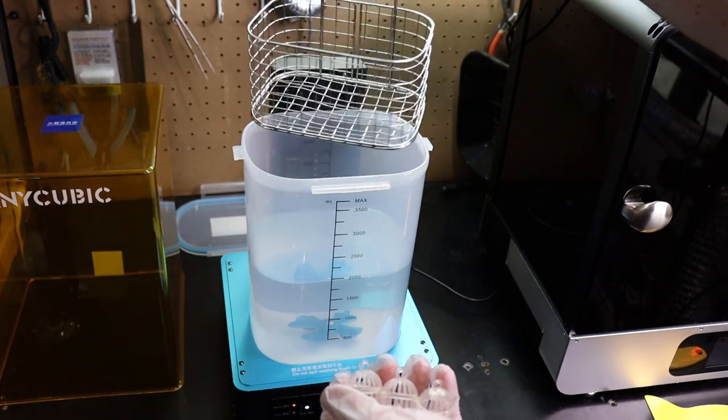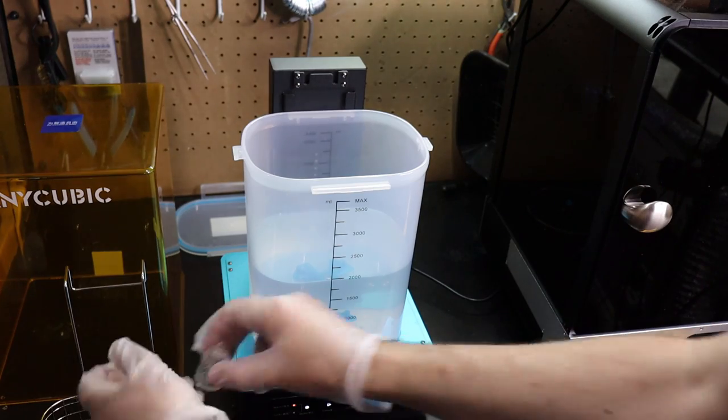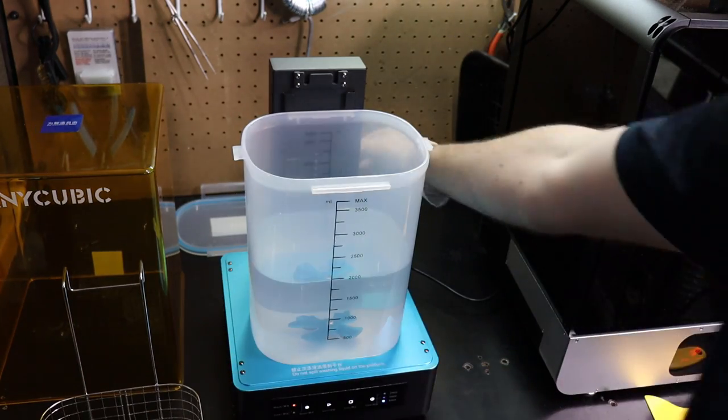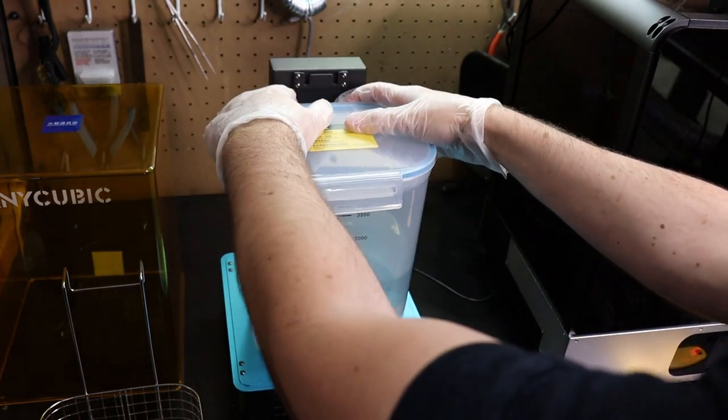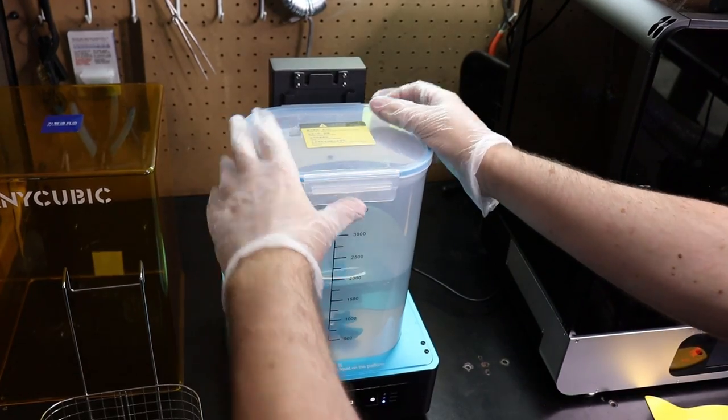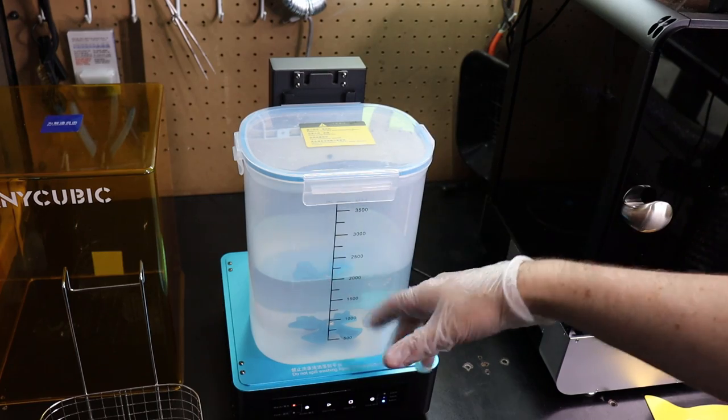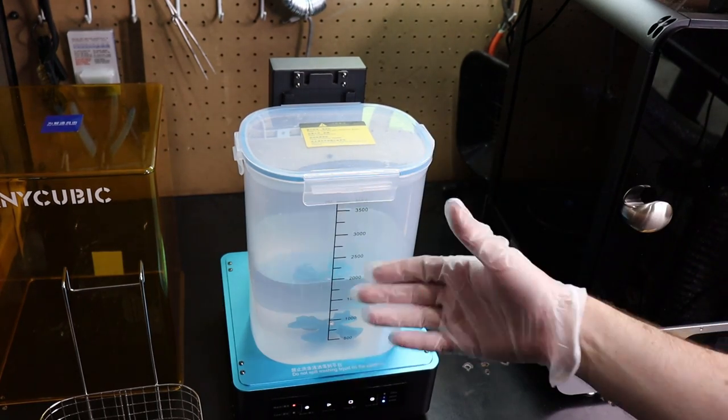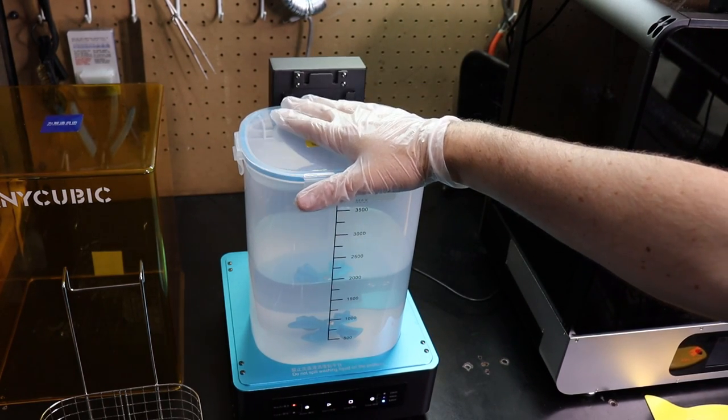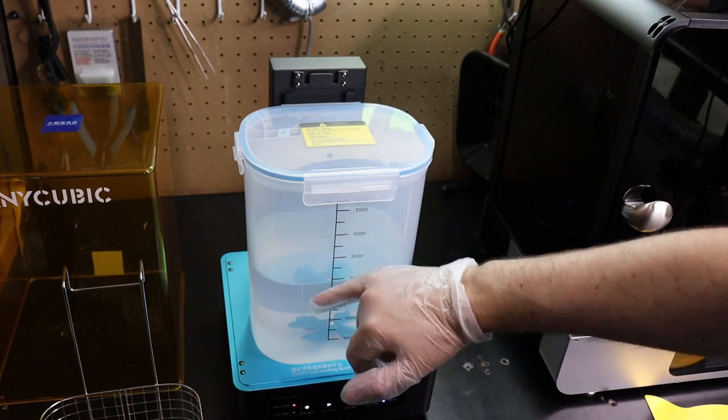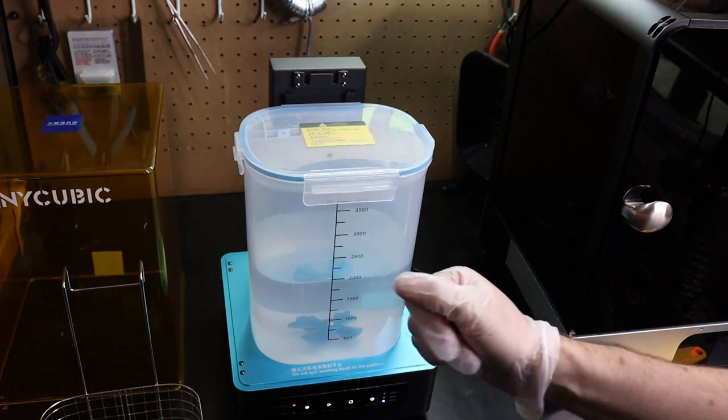But this needs to all get taken down. And this needs to be sealed. Luckily it comes with a little sealable top. And then you can keep this to use it for next time. Once it gets too cloudy in the alcohol, then you need to get rid of the alcohol. And to do that, put this entire container out in the sun for about a day or so. And it will basically turn all of the resin in here into cured resin, which is then safe to dispose of.